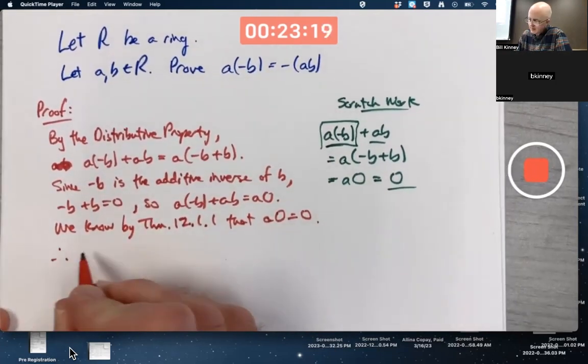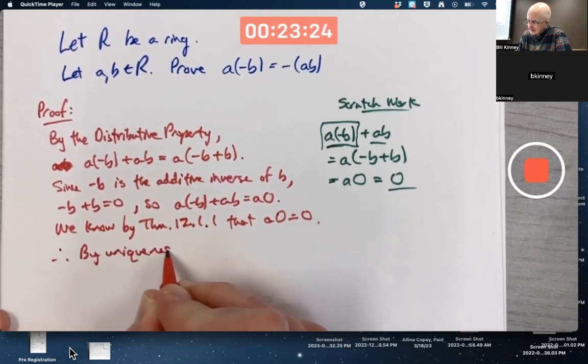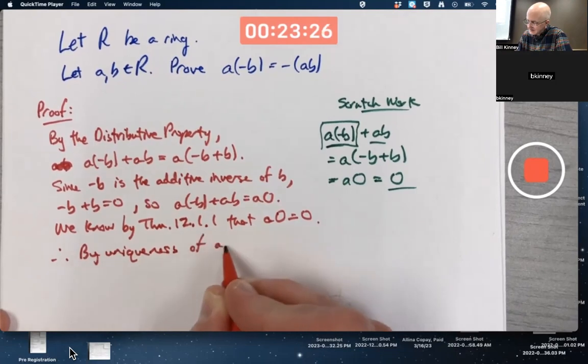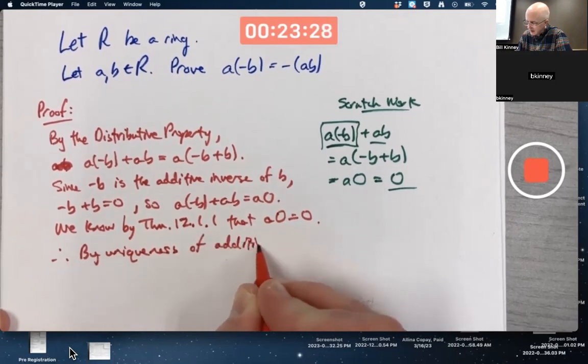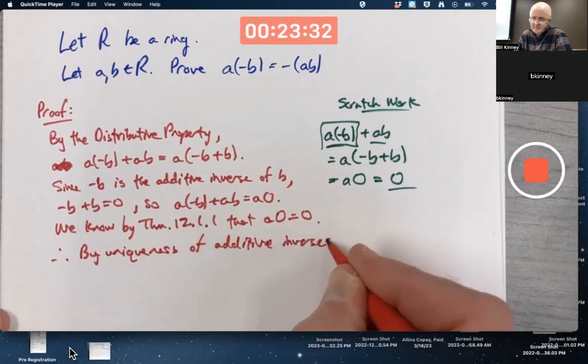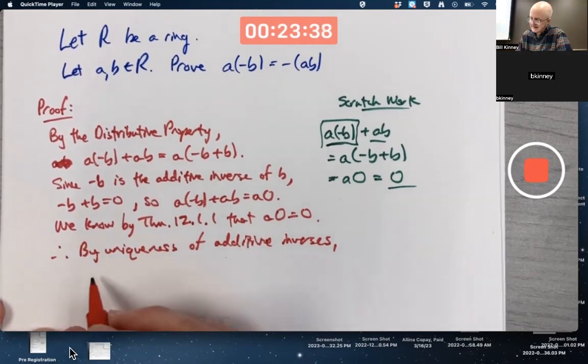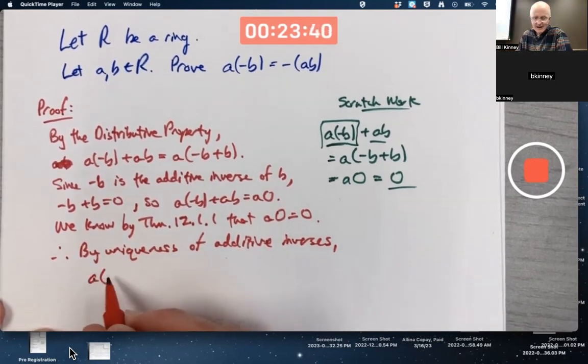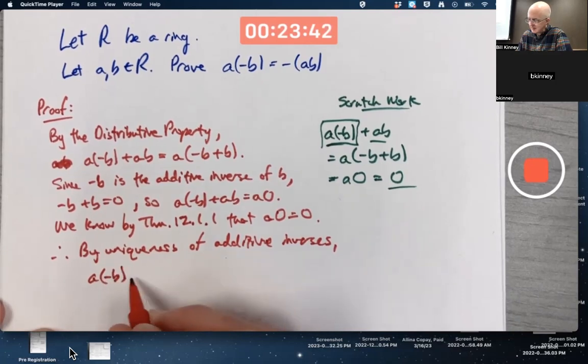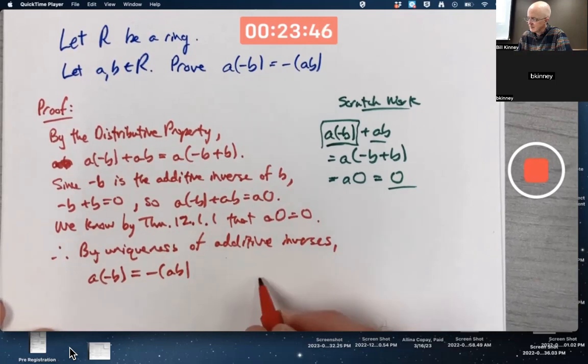Therefore, by uniqueness of additive inverses, I'm being maybe a little overkill here. In groups, rings are groups under addition. A times the additive inverse of B must be, in fact, the additive inverse of AB. We're done. Praise the Lord.